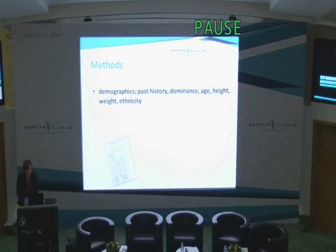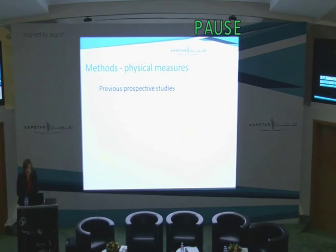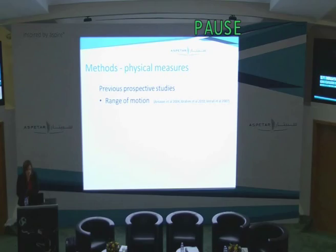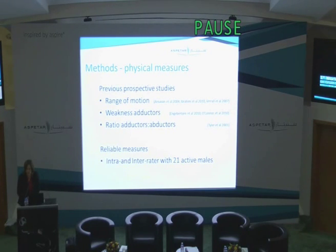In terms of the methods, when the athletes presented for screening, we obtained demographic information pertaining to their past history, dominance, age, height, weight and ethnicity, though I will not be presenting all of this data today. We also marked the athletes up and measured their lever arm, which we used for normalising the strength test. Our decision about which test to use was done after searching the literature and looking at other prospective studies that found evidence that range of motion is a risk factor, as well as weakness of adductors and particularly the ratio of adductors to abductors. We looked at reliable measures, and where reliability had not been established in the literature, we conducted a small inter- and intra-tester reliability trial with 21 active males. Our ICCs were good with low error measurements.